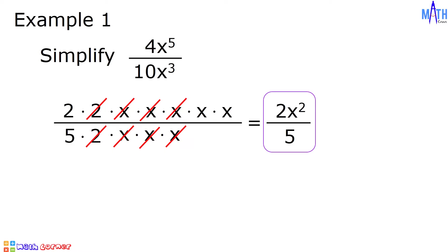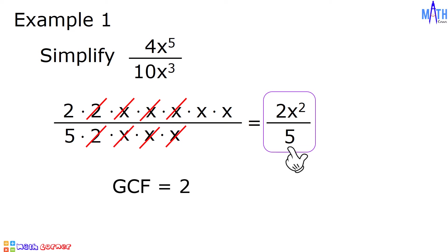Let us use another approach to simplify this. Since the GCF between 4 and 10 is equal to 2, let us divide 4 and 10 by 2. Next, for x raised to 5 divided by x cubed, we will apply the law of exponents. If we are dividing expressions with the same base, we subtract the exponents. x raised to 5 divided by x cubed is equal to x raised to 5 minus 3, and that is equal to x squared.